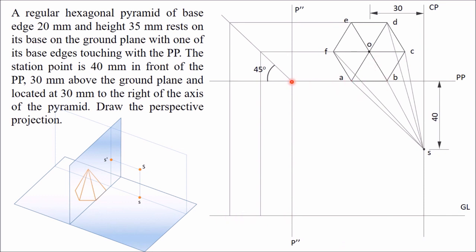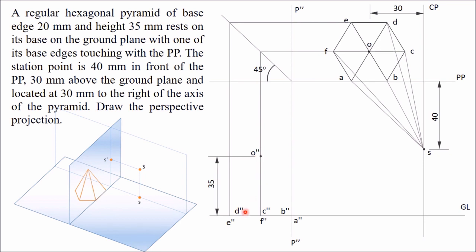A and B are brought to the side view and marked as A double dash and B double dash. When you look from this side, A double dash is visible and B double dash is not visible. In the next line you get F, O, and C — F double dash and C double dash are on the ground line; F is visible and C is not. Similarly, E double dash and D double dash: E is visible and D is not. O is in this line but at a height of 35 mm, so from the ground line take 35 mm and mark O double dash. Join O double dash with all points to get the side view of the pyramid.